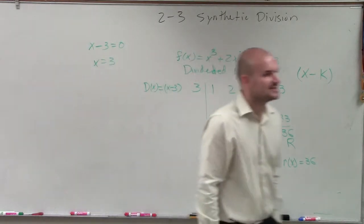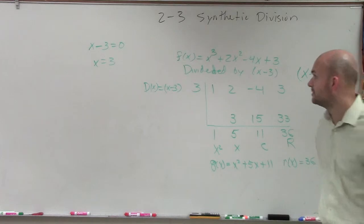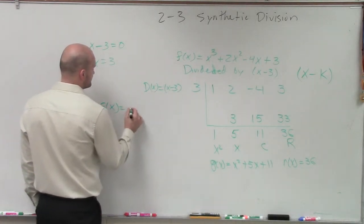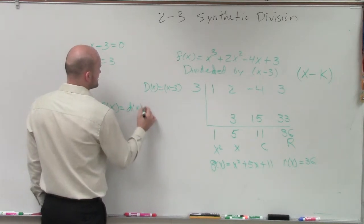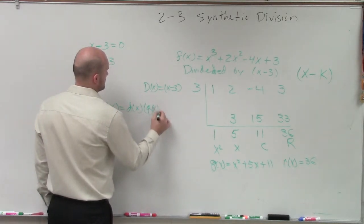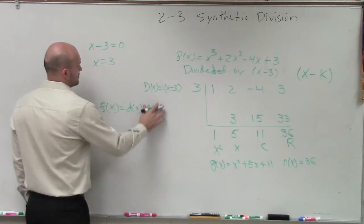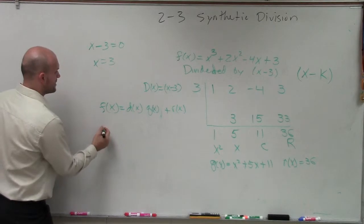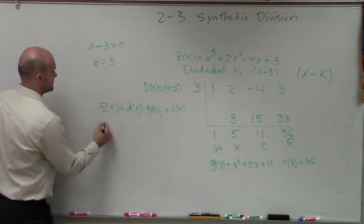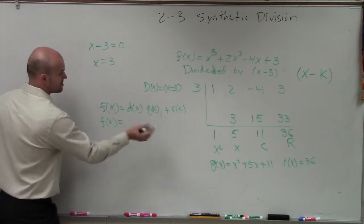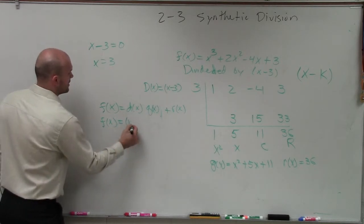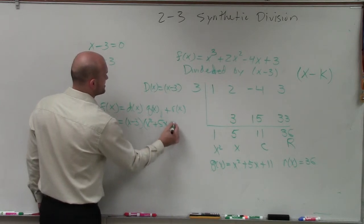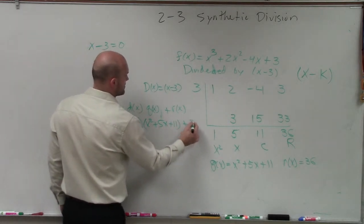So if I wanted to write this using our division algorithm, I can say that, remember, our division algorithm is f(x) equals D(x) times Q(x) plus R(x). So in this case, what we'd have is, we could say f(x) equals D(x), which is x minus 3 times Q(x), x squared plus 5x plus 11, plus 36.